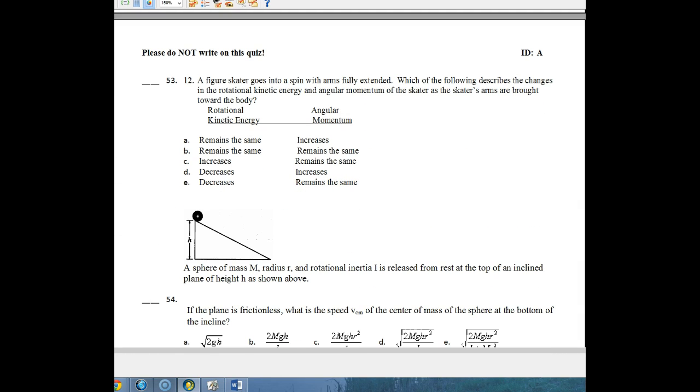Figure skater goes into spin with the arms fully extended. They want to know which of the following describes the changes in rotational kinetic energy and angular momentum of the skater as the arms are brought towards the body. One of the things that we can do is think about the angular momentum. The angular momentum cannot change, and it's mainly because there's no external torque. So this has to remain the same.